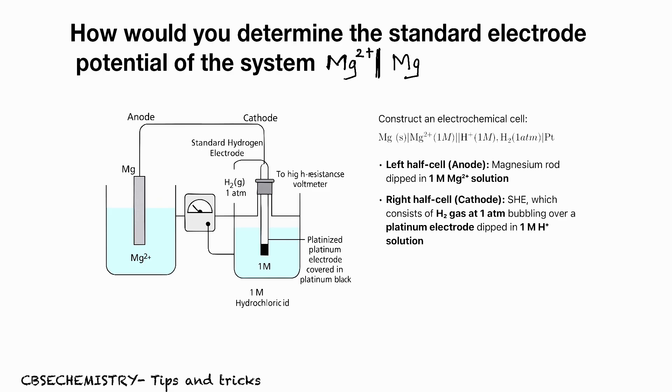To find the standard electrode potential of the half cell Mg²⁺ to Mg, we have to construct an electrochemical cell in such a way that this half cell must be on the left side. That means Mg dipped in MgSO₄ solution must be on the anodic part, left side.